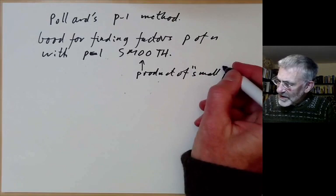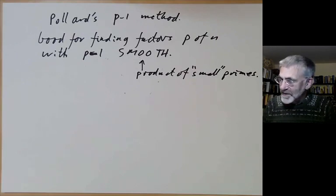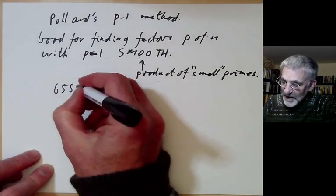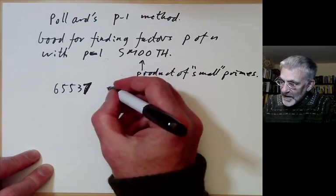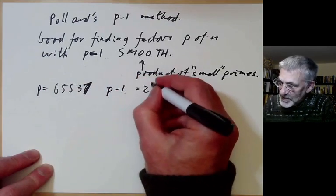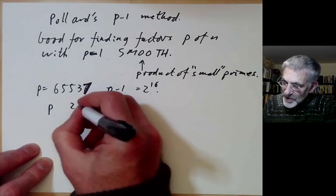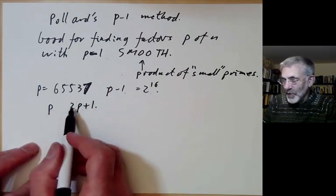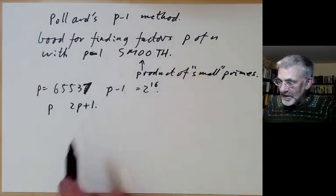What does small mean? Well, it doesn't really have a precise definition, but some numbers obviously are smooth. For instance, if p equals 65537, then p-1 is in some sense smooth, because it's equal to 2 to the 16. On the other hand, you sometimes get primes p such that 2p plus 1 is prime. And then 2p plus 1 is certainly not smooth, because that minus 1 is just a product of 1 prime and 1 very large prime. Pollard's method is good for finding factors such that p minus 1 is smooth.